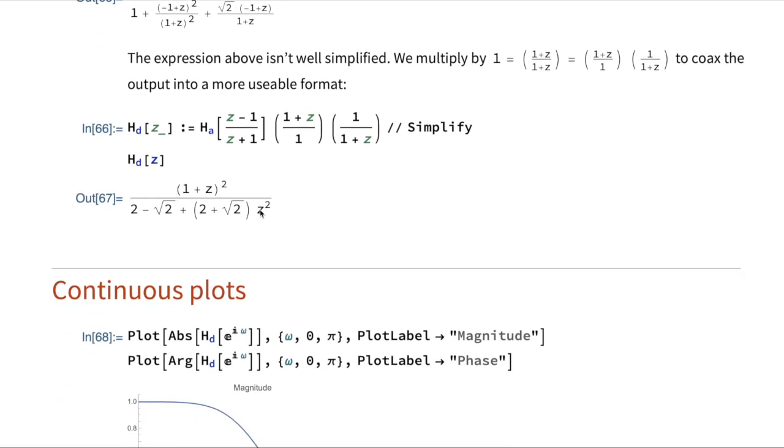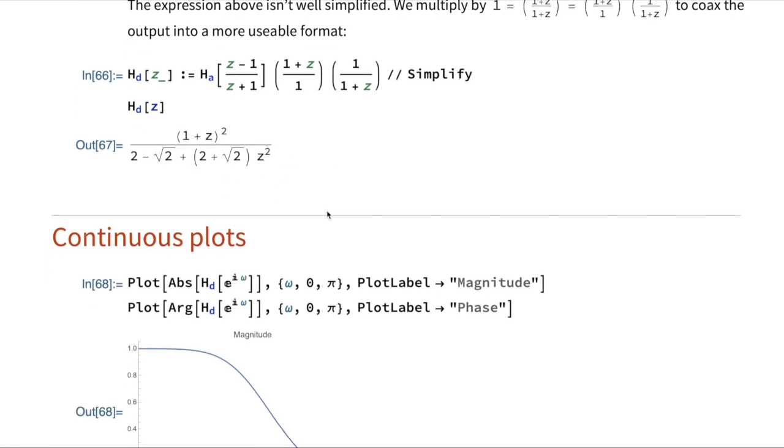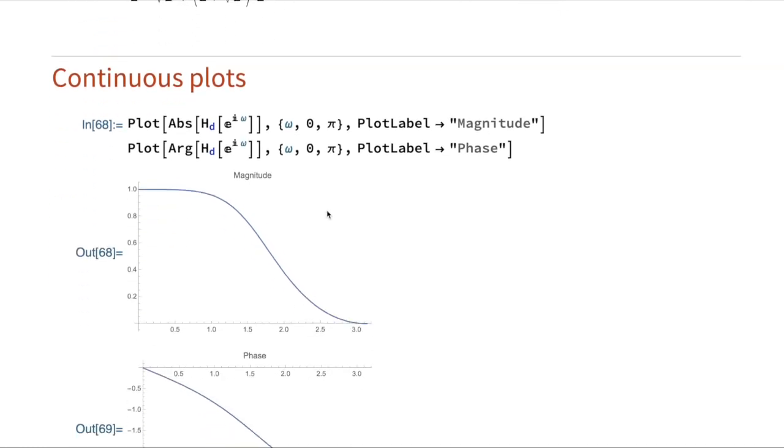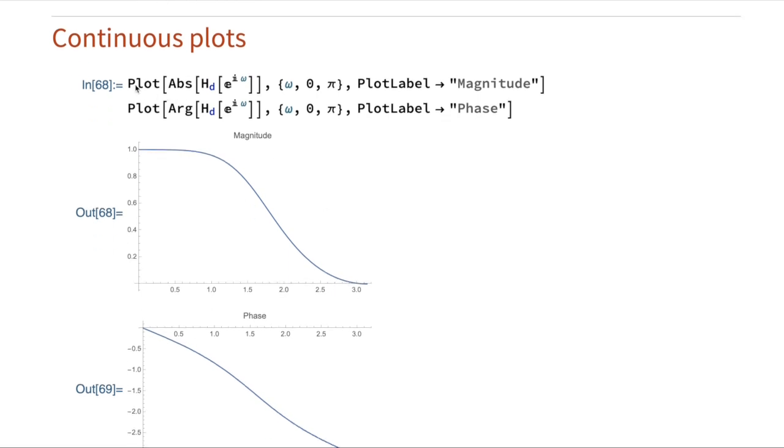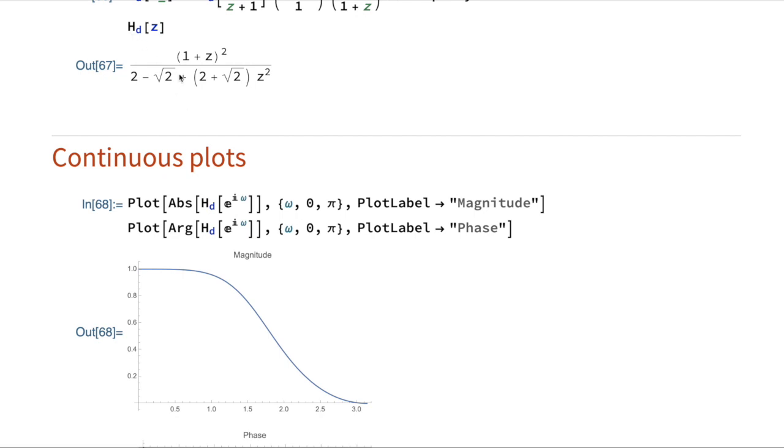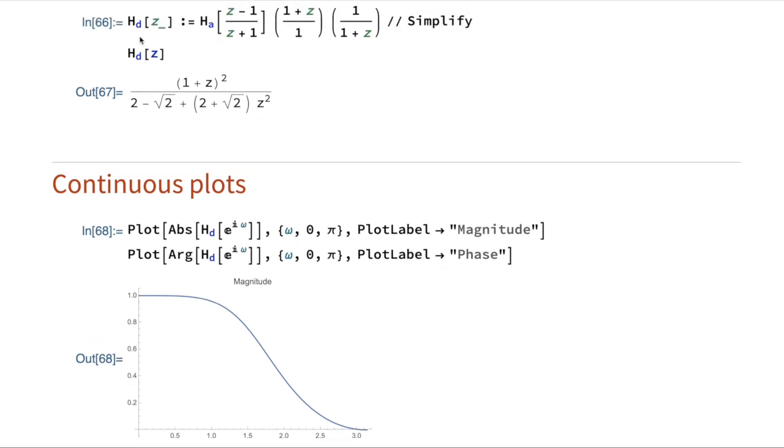So this method would work on any filter transfer function, but I just wanted to show these steps about how we got the transfer function. And I can make the continuous plots just by calling the plot function in Mathematica, which is a function that does continuous plots. I'm calling this function here.